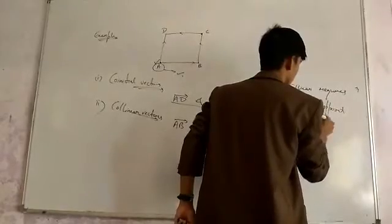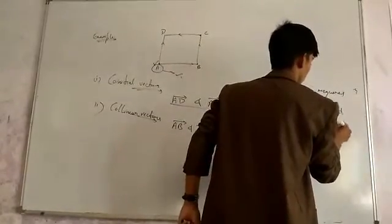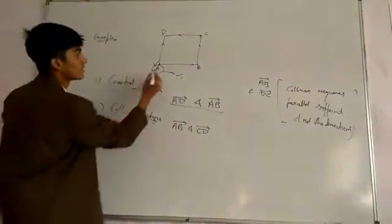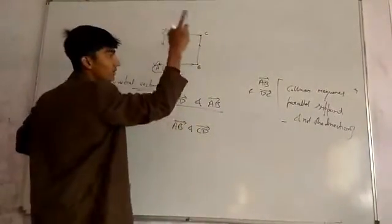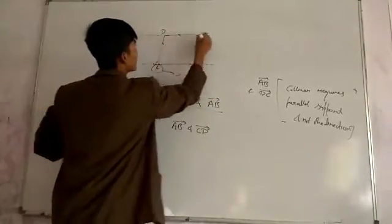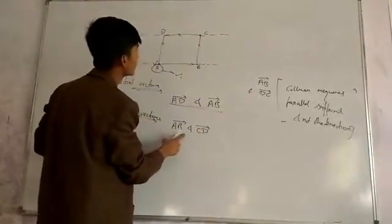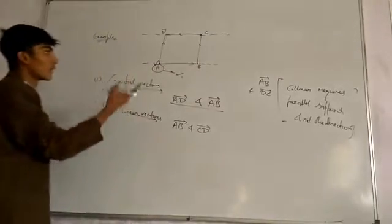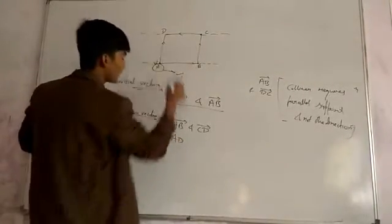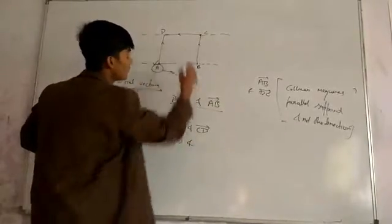And not the direction. In spite of the fact they have opposite direction, their support are still parallel. So I have written AB vector and CD vector are co-linear vectors. You can also see these two vectors are also co-linear. They are AD vector and BC vector.